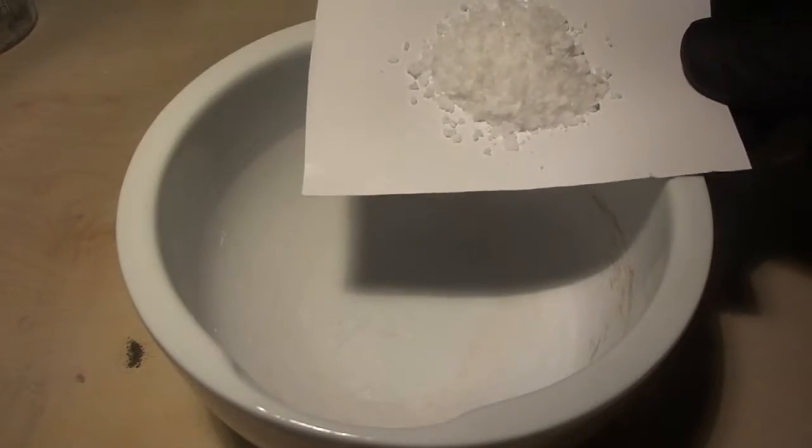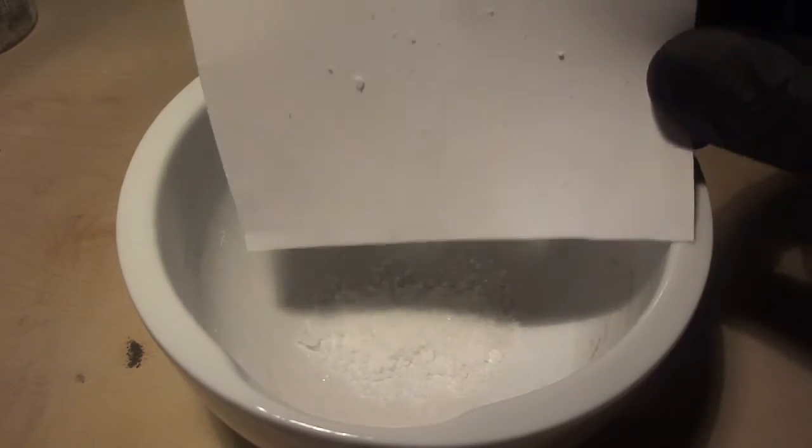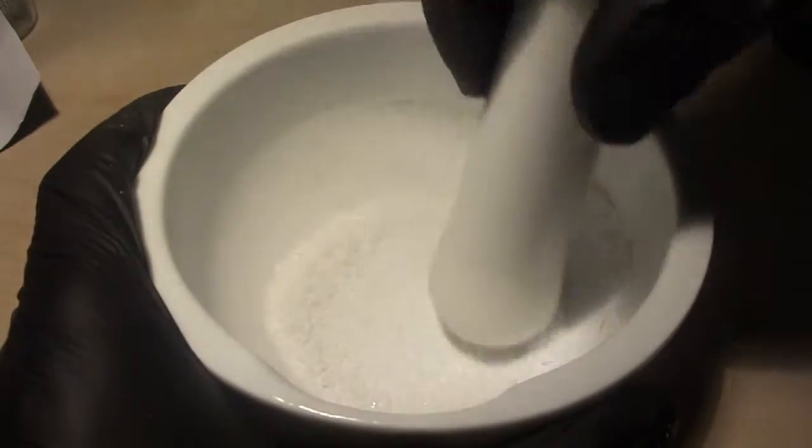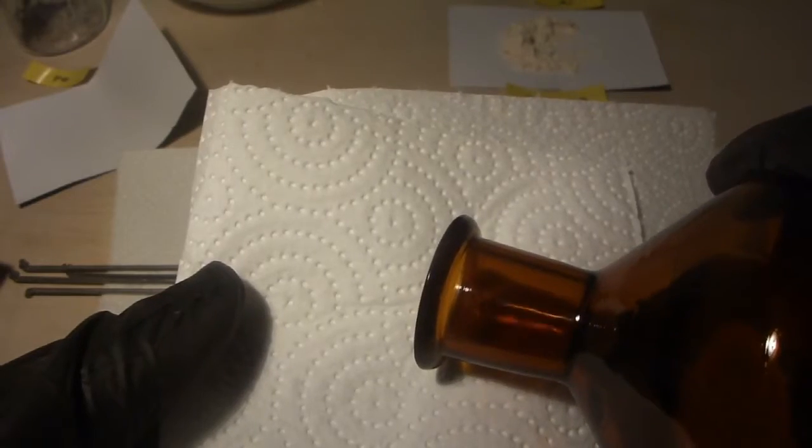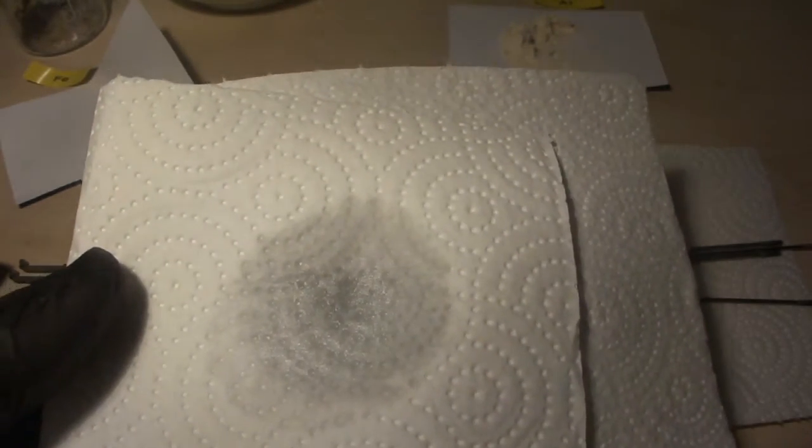We now have to finely pulverize our barium nitrate in a mortar. Degrease your steel rods so that the composition will stick well to it. You can use hexane for this as well.